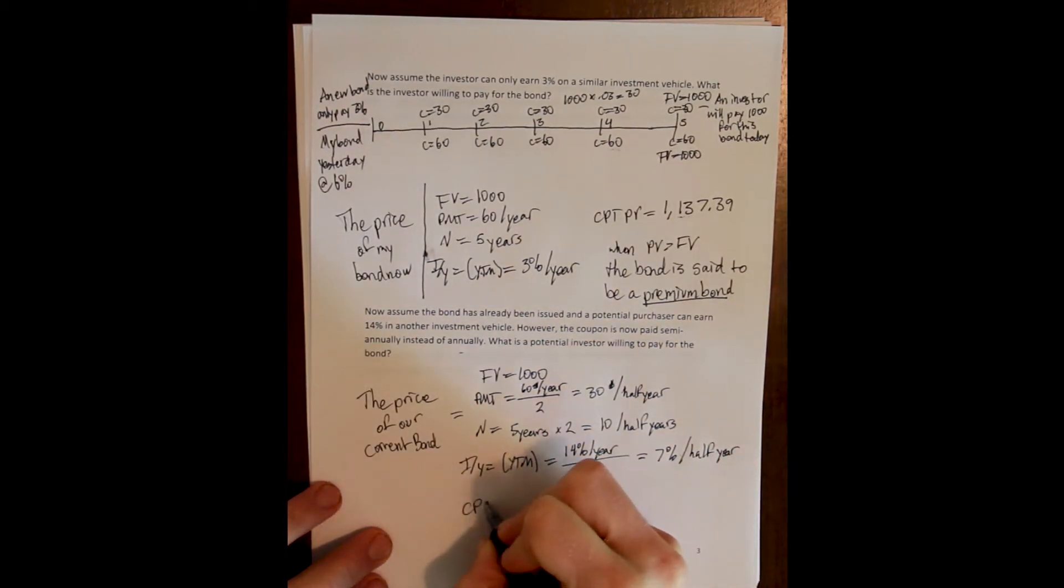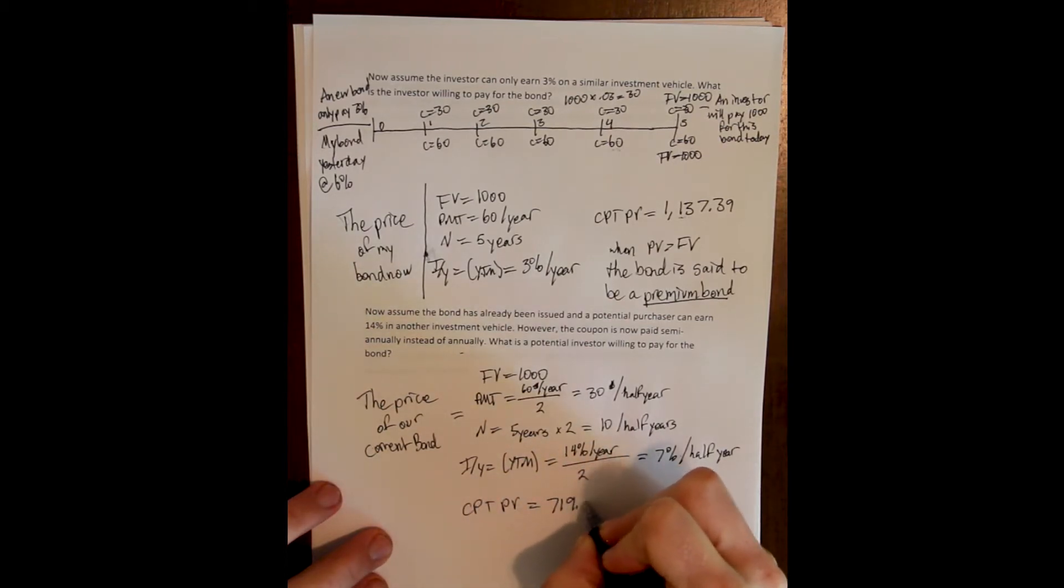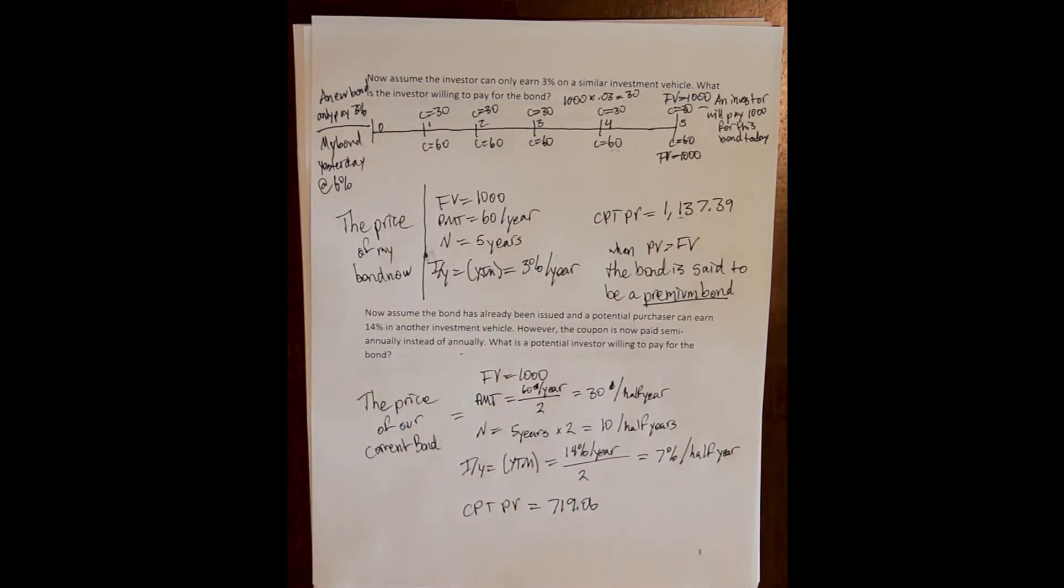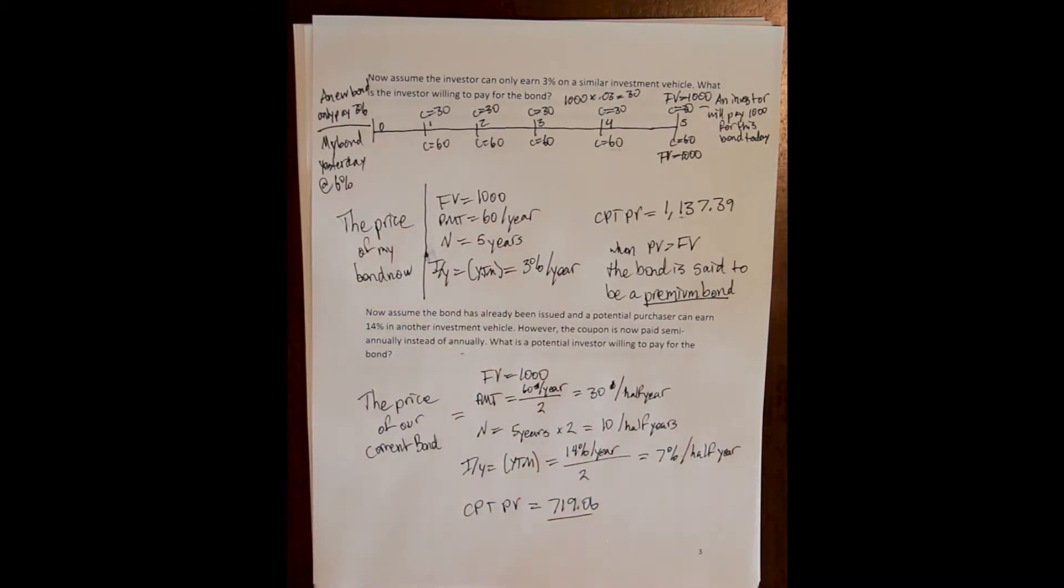And now I can compute my present value and get $719.06. So again, of course, we knew we were going to get a discount here.